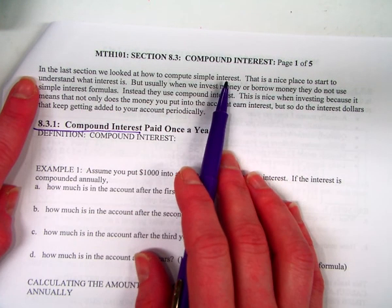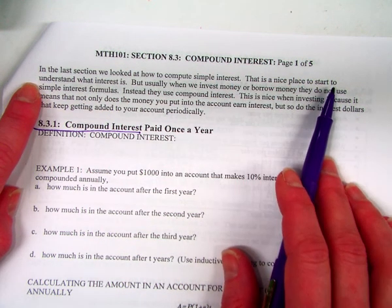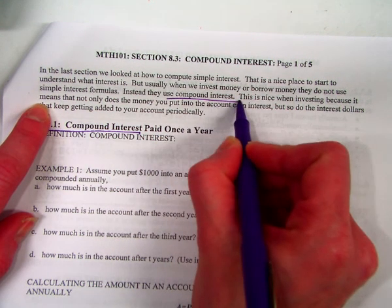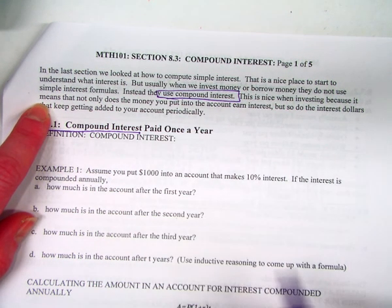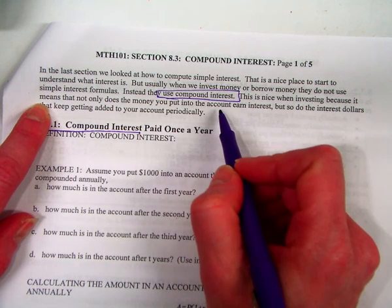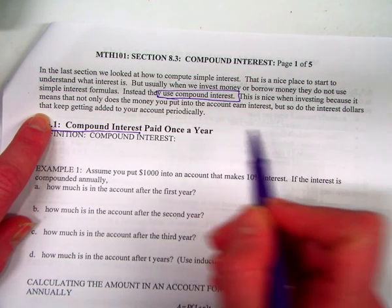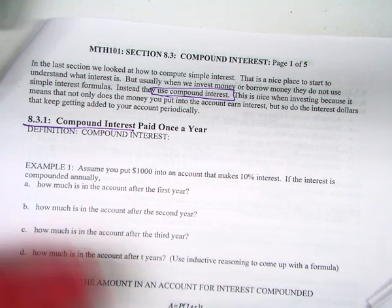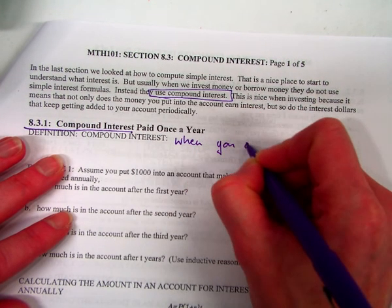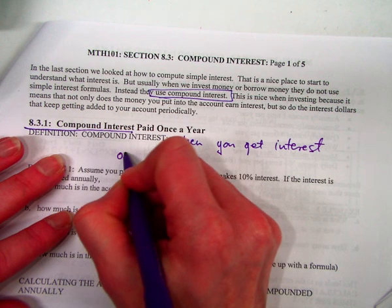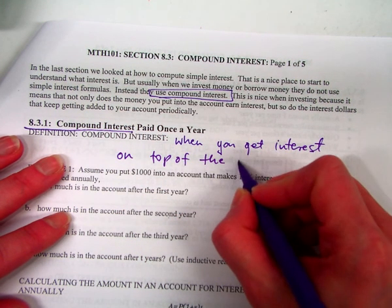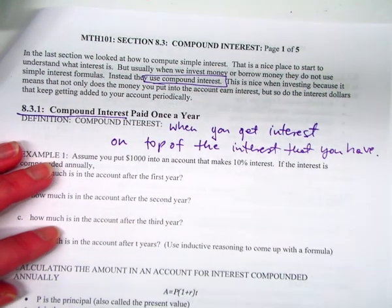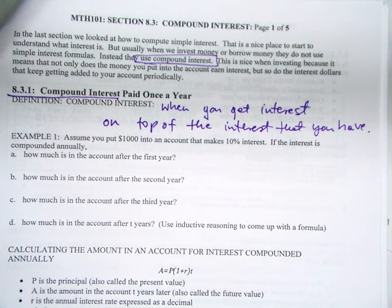In the last section, we looked at how to compute simple interest. That is a nice place to start to understand what interest is. But usually when you invest money or borrow money, they do not use simple interest at the bank. Instead, they use compound interest. This is nice when investing, because it actually gives you more money. Because when you earn interest, the interest gets added to the total amount. So there's more money you get out of this. So compound interest, let's say, the definition that we're going to say, it happens when you get interest on top of the interest that you have.